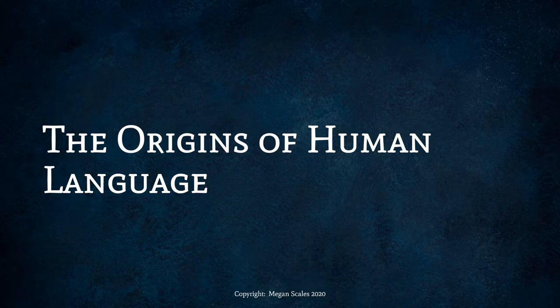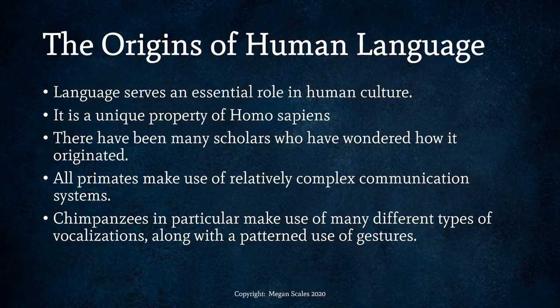Language serves an essential role in human culture. It is a unique characteristic or property of our species, Homo sapiens, or more specifically Homo sapiens sapiens. Many scholars have wondered how it originated, and anthropologists are often looking into this. Linguistic anthropology and physical anthropology will often intersect when studying how language originated, and even archaeology intersects with this question. All primates make use of relatively complex communication systems, and humans take that even further with language.